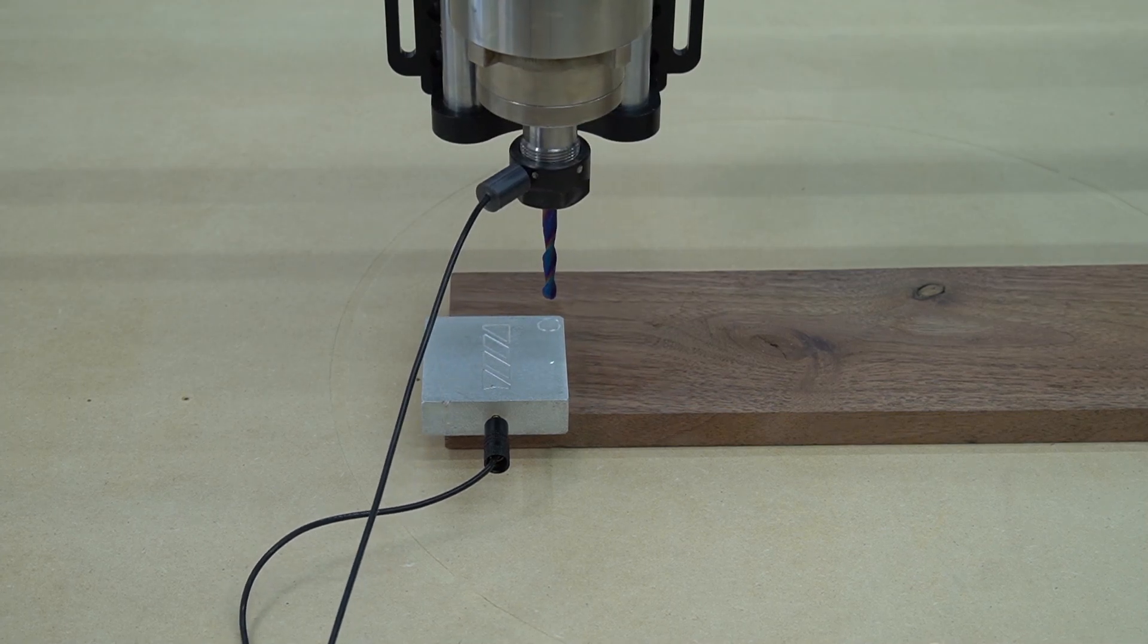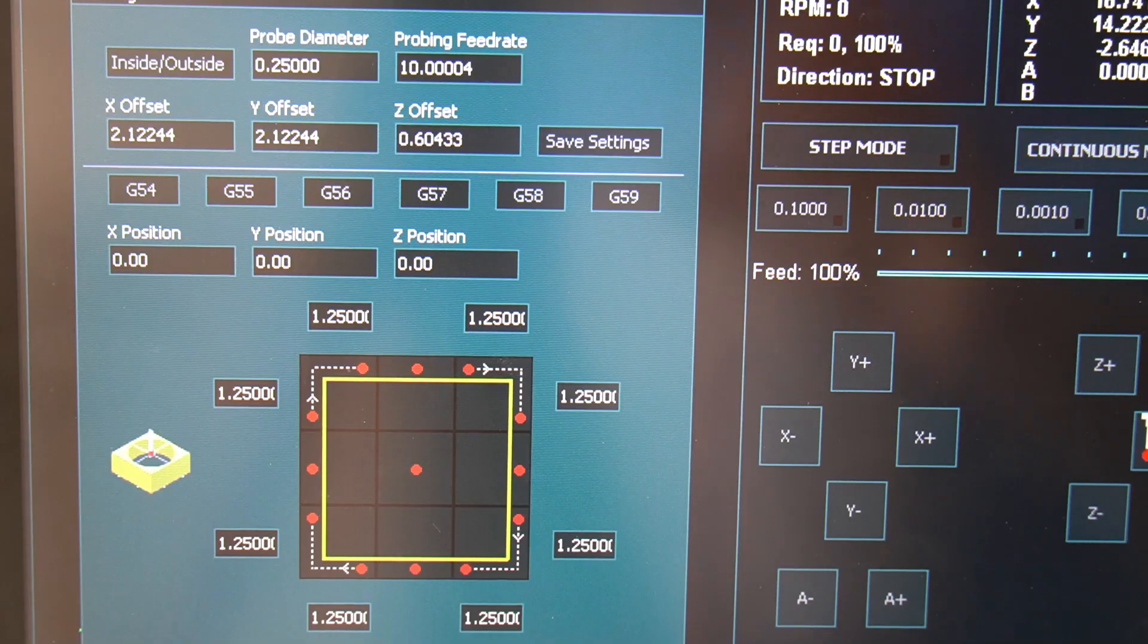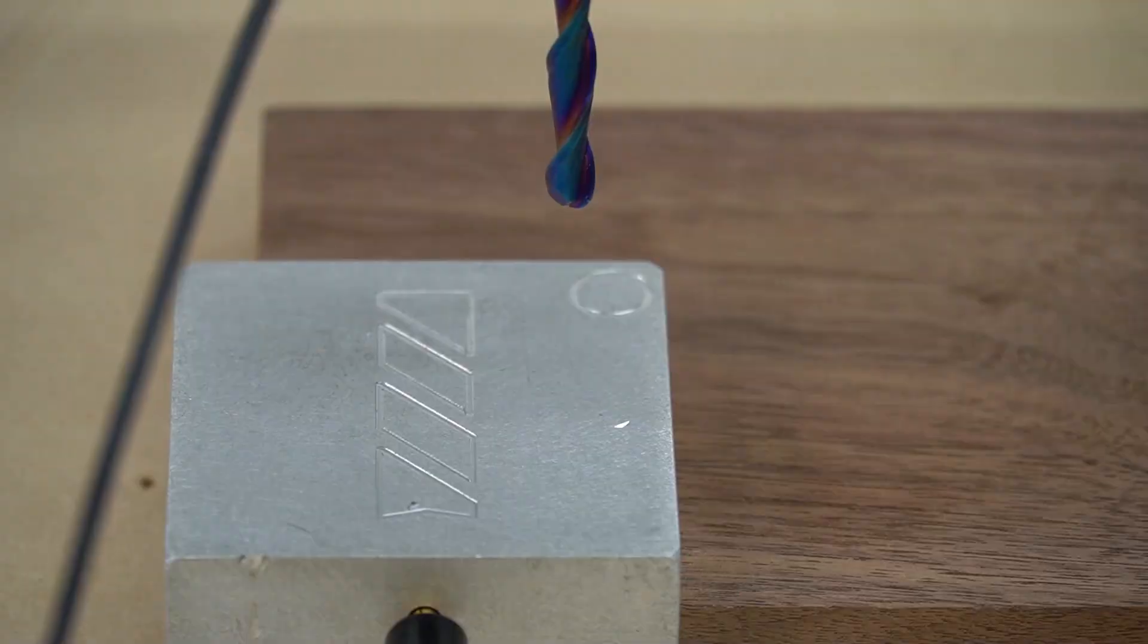Once done probing for X and Y, we can move the machine to the top of the probe, then press the center button to probe for Z.